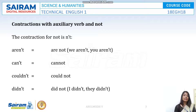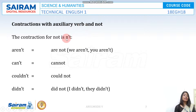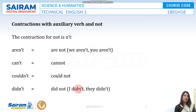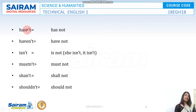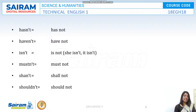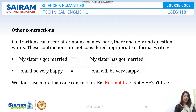Contractions with auxiliary verb and 'not': 'are not' becomes 'aren't,' 'can not' becomes 'can't,' 'could not' becomes 'couldn't,' 'did not' becomes 'didn't,' 'has not' becomes 'hasn't,' 'have not' becomes 'haven't,' 'is not' becomes 'isn't,' 'must not' becomes 'mustn't,' 'shall not' becomes 'shan't,' 'should not' becomes 'shouldn't' — similar to how we contract in question tags.